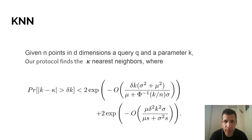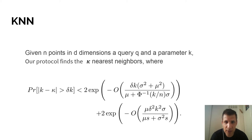To wrap up the theoretical analysis: given n points in d dimensions and another query point q and parameter k, our algorithm finds the kappa nearest neighbors, where the probability that kappa is far from k is bounded by something that is exponentially small.